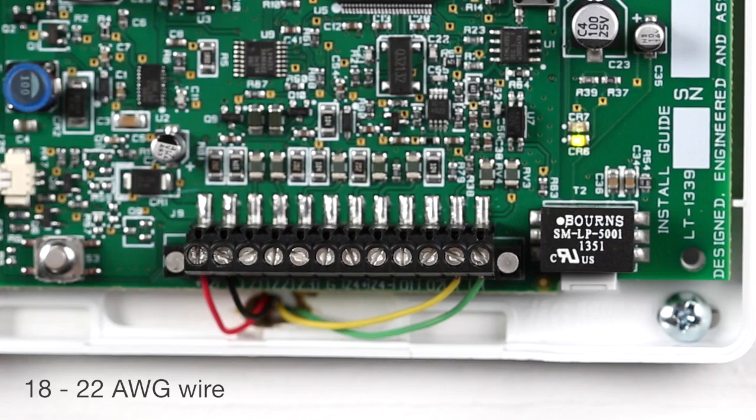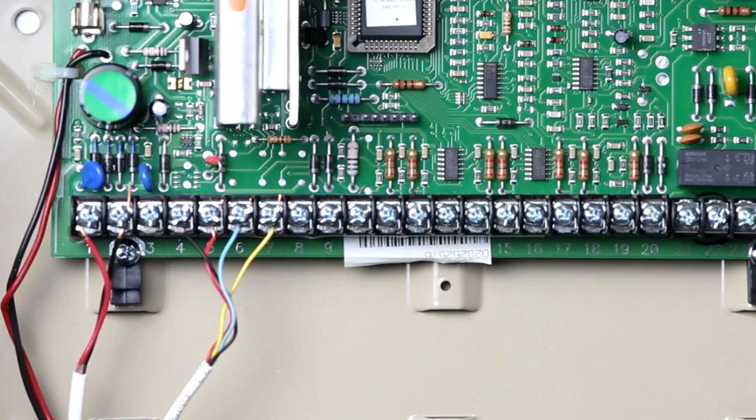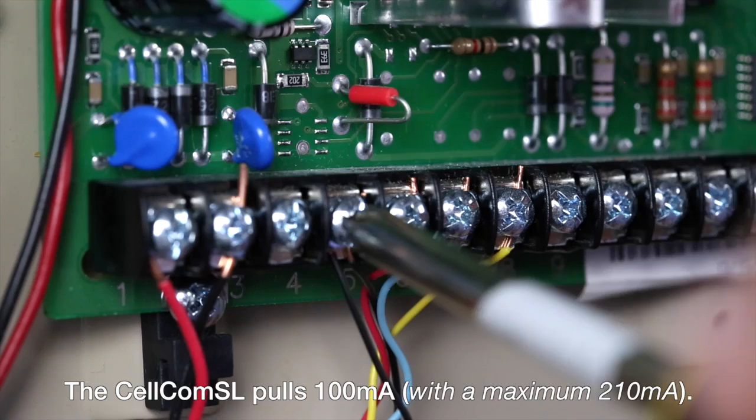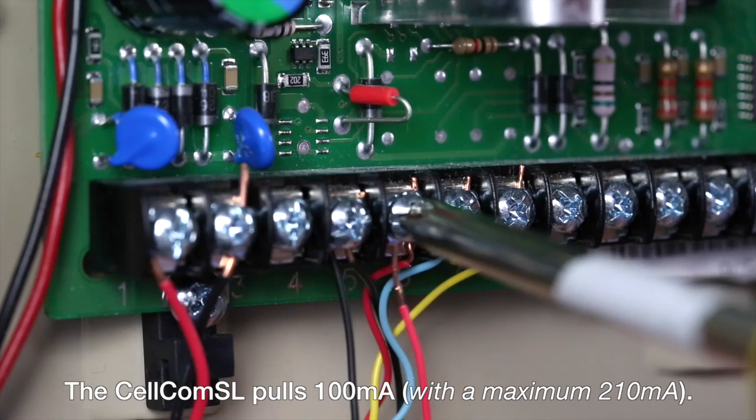Using 18-22 gauge wire, connect the plus 12-volt and ground terminals of the Cellcom SL to the host panel's auxiliary power terminals. Make sure to perform a battery calculation to ensure that the Cellcom SL, along with existing connected devices, do not exceed the panel's rated output.